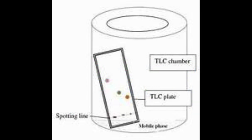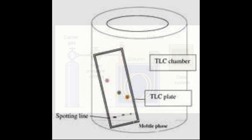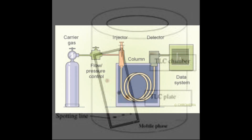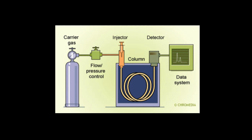In TLC, we saw a solid stationary phase — the plate — and a liquid mobile phase, the solvents in the chamber, moving the compounds that were deposited on the TLC plate. In GC, the solute components partitioned between a liquid stationary phase absorbed onto a solid support in a column in an oven, and a gas mobile phase, usually helium.